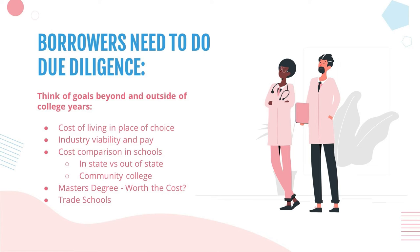One thing we saw especially in 2008 was folks going back for a master's degree — make sure it's worth the cost. Sometimes kids get out of school, don't know exactly what they want to do yet, go back into school, gain more student debt, and maybe it's not worth what they're actually going into. So really weigh whether it's worth the costs, and also evaluate trade schools. The government has really pushed college education, but there are also great trades where you can go in debt-free, make good money, and maybe even own your own business.